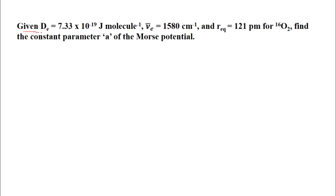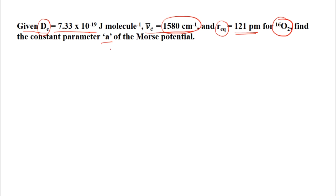We will now solve one problem before ending this lecture. Given: dissociation energy D_E = 7.33 × 10⁻¹⁹ J/molecule, fundamental frequency nu-bar_E = 1580 cm⁻¹, and equilibrium bond length r_eq = 121 pm for ¹⁶O₂. Find the constant parameter A of the Morse potential, V(r) = D_E [1 − e^(−A(r − r_eq))]².